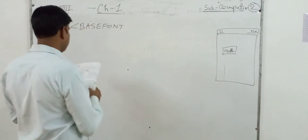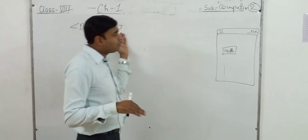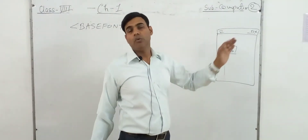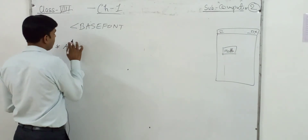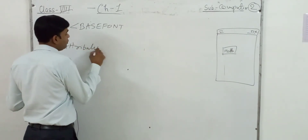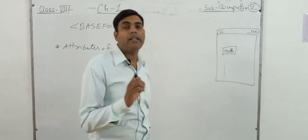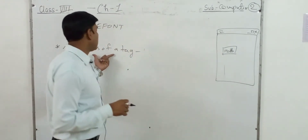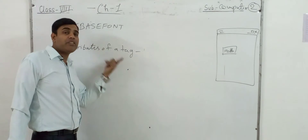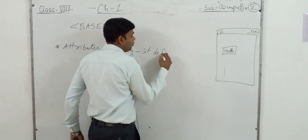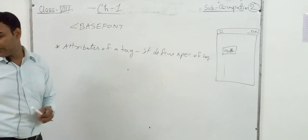We need to look at the attributes of the base font tag. Attributes of a tag define the characteristics of that tag — they define how a tag will work and its different specifications. For base font, we can look at color, size, and face as its attributes.